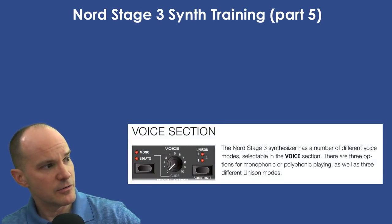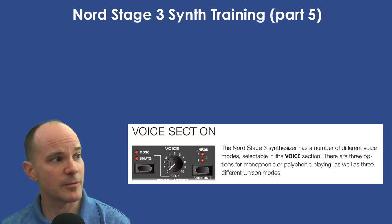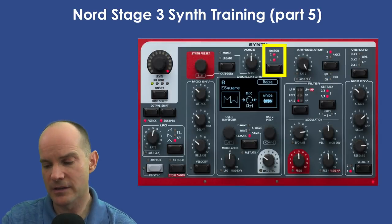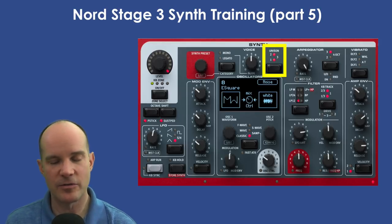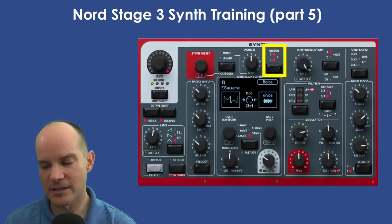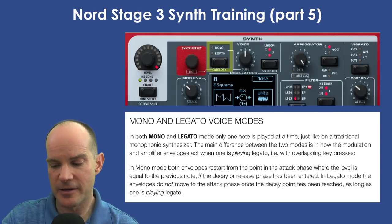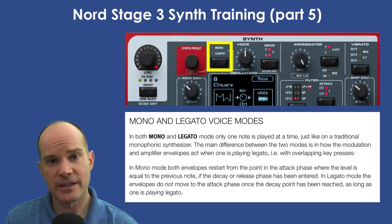If you look at the voice section under the Nord Stage 3, you'll read that the Nord Stage 3 Synthesizer has a number of different voice modes selectable in the voice section. There are three options for monophonic and polyphonic playing, as well as different unison modes. Unison is mentioned here, but I won't be talking about it in this particular video — you can go to part 2 for that. In both mono and legato mode, only one note is played at a time. The moment you invoke either of these options, it's one note at a time.